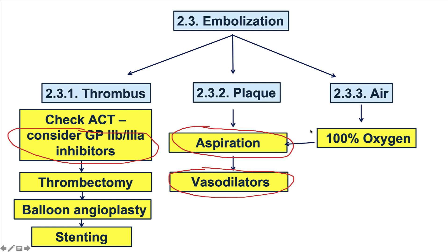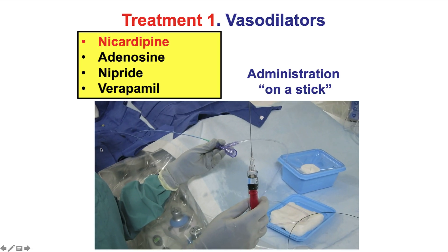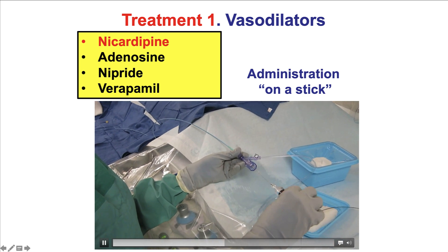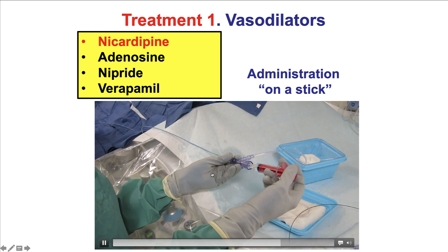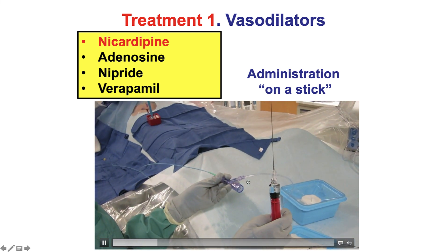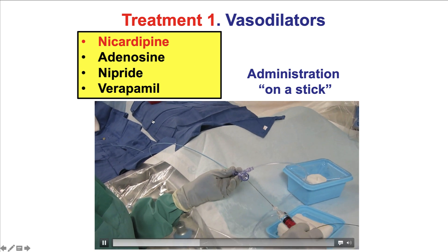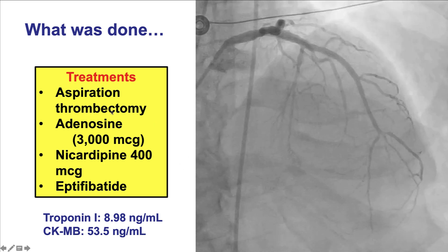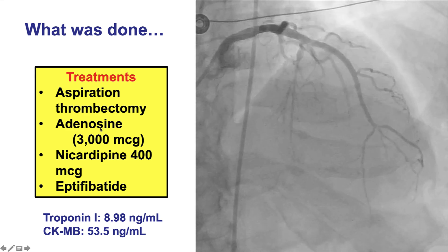How to treat this patient? This is likely an example of plaque embolization, but as discussed, there is often a component of thrombus formation on top of that. The plan was to aspirate, give vasodilators, and consider more aggressive antiplatelet therapy with glycoprotein 2B3A inhibitors. Nicardipine as well as adenosine were administered — one way to give this without disconnecting connections is to administer it 'on the stick,' using an introducing needle inserted through the Y-connector so the vasodilator is given through the guide catheter. Aspiration thrombectomy was performed, followed by intracoronary administration of adenosine and nicardipine.